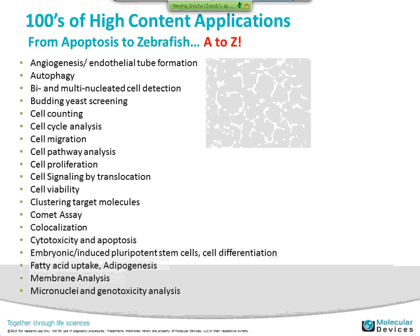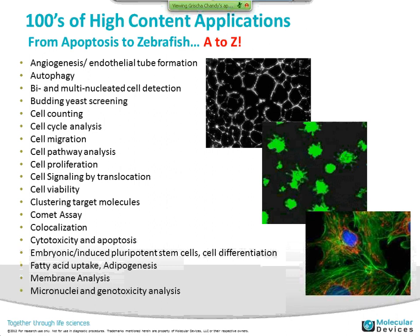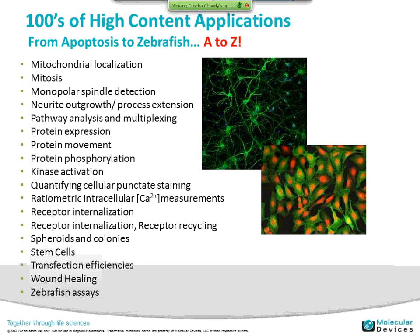A little bit about high content screening: it's essentially a way to acquire many, many images, but it enables hundreds of applications. We like to say it enables applications from apoptosis to zebrafish, from A to Z. On the screen you're seeing a list of applications that people are using with high content screening: angiogenesis, GPCR, cell proliferation, micro-nuclear counting, mitochondrial localization, kinase activation, and all the way up to whole animals like zebrafish.